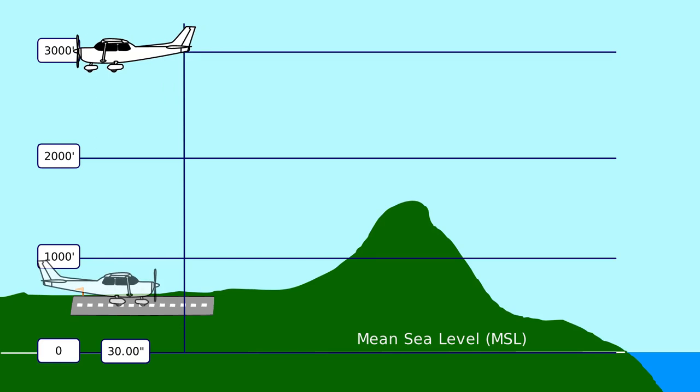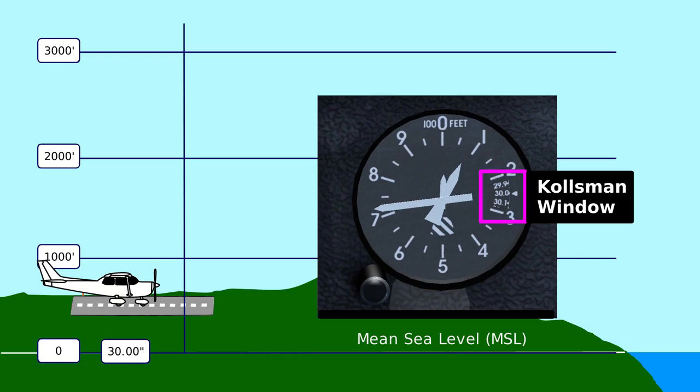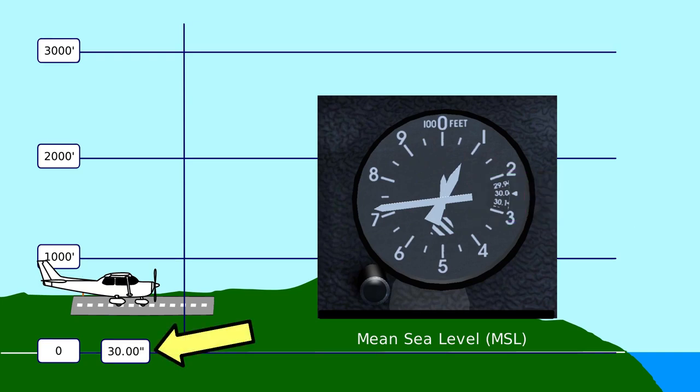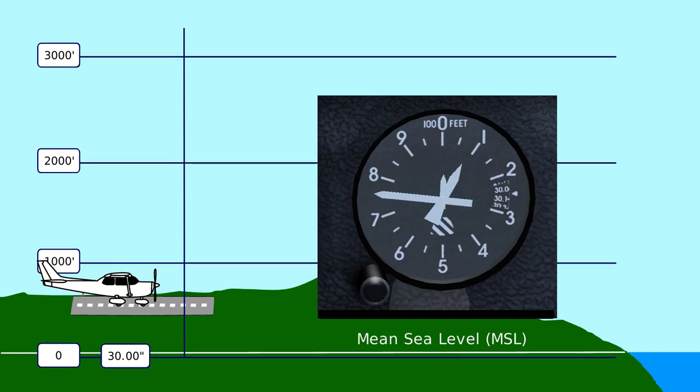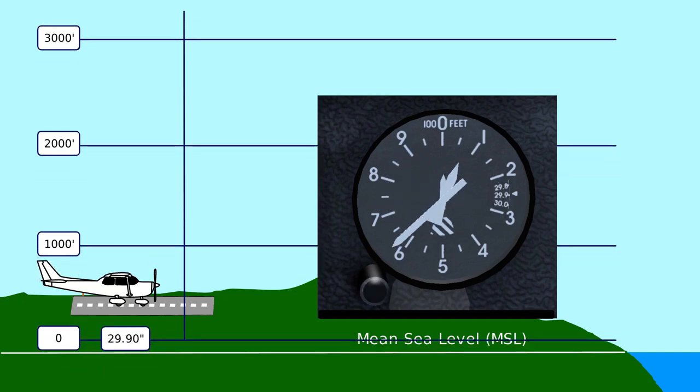To calibrate an altimeter, we dial an altimeter setting into the Kollsman window, which is a small four-digit number on the face of the instrument. The altimeter setting is the pressure at sea level directly below us. Raising the altimeter setting raises our indicated altitude, and lowering it lowers our indicated altitude.